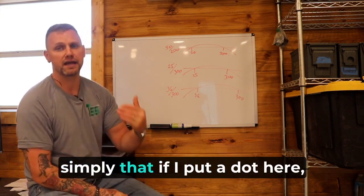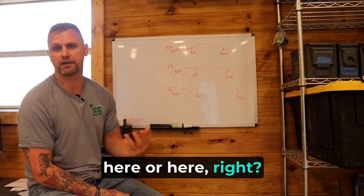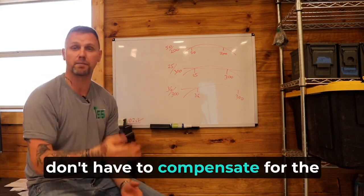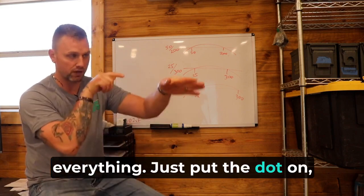Battle sight zero means simply that if I put a dot here, I'm going to hit either here or here, right? That's all we're saying is that we're going to hit in this effective zone with that battle sight zero and that we don't have to compensate for the bullet drop and rise and everything. Just put the dot on, pull the trigger.